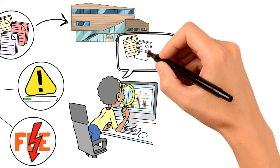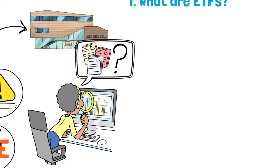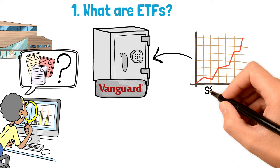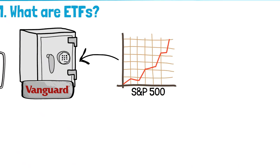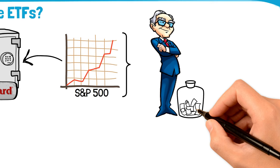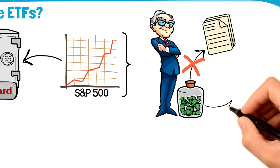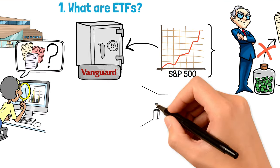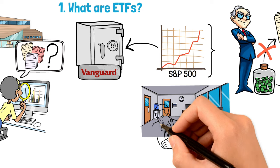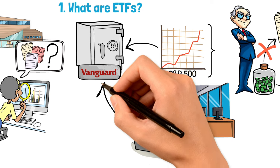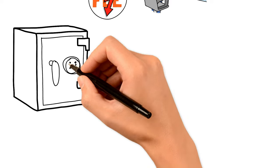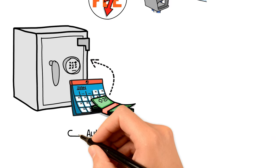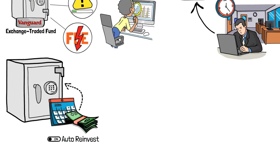Vanguard's ETFs are particularly appealing because they're designed to track the performance of a specific index like the S&P 500, giving you a slice of the market's action with just one investment. ETFs are also super flexible—you can buy or sell them anytime during the trading day. The dividends from the companies within these ETFs get reinvested right away, boosting your potential returns through the magic of compounding.